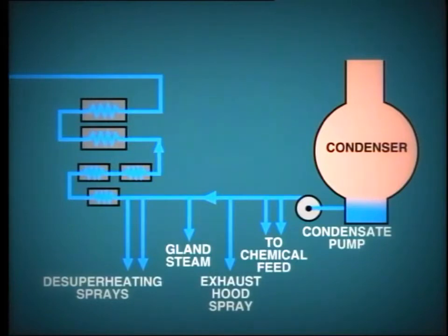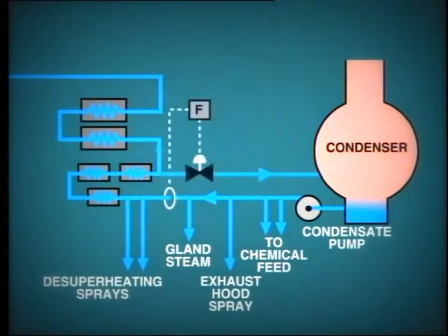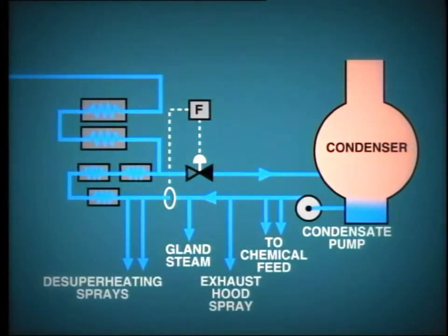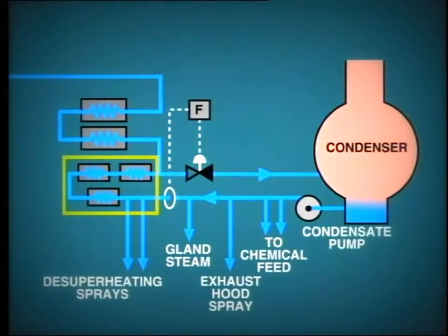We also note here a recirculation connection which passes condensate back to the condenser through a control valve. This connection is used during startup of the turbine to ensure a constant flow of condensate through the ejector condenser and gland steam condenser.